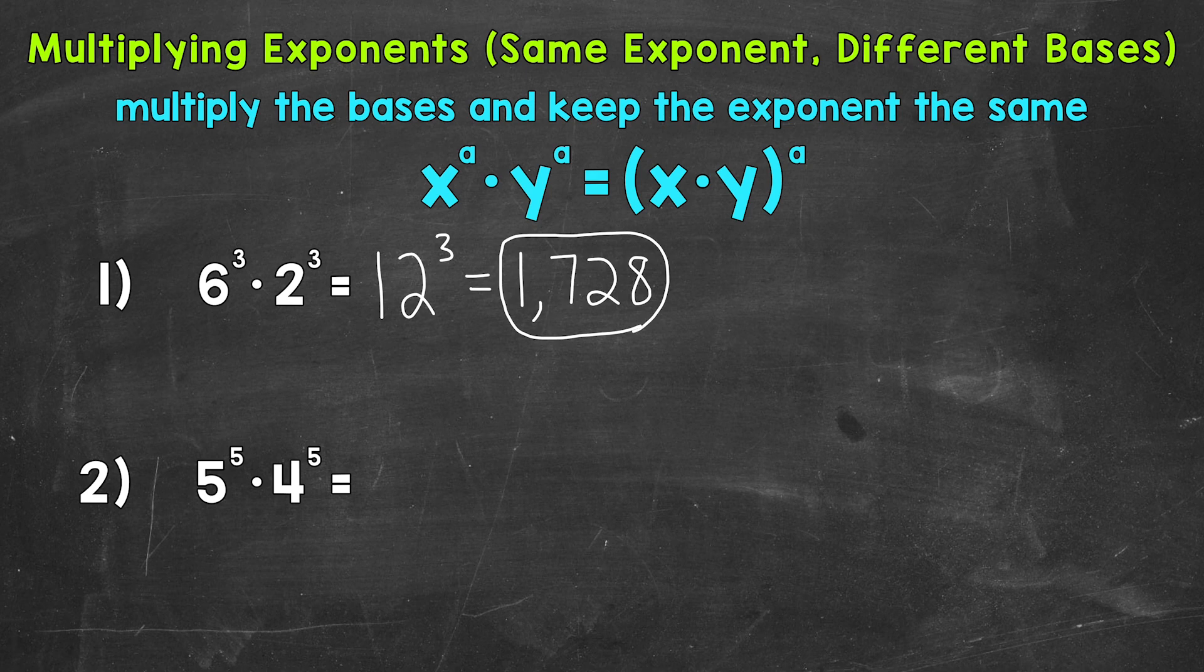Let's move on to number 2, where we have 5 to the power of 5 times 4 to the power of 5. Multiply the bases. 5 times 4 equals 20. And then keep that exponent of 5 the same. So we get 20 to the power of 5.